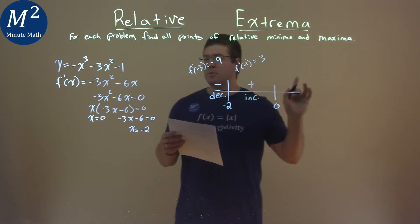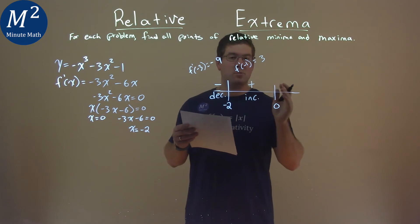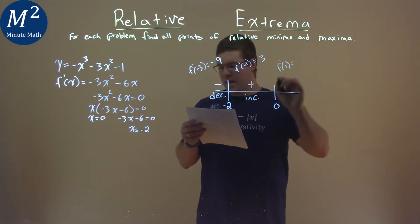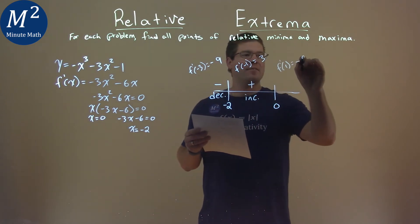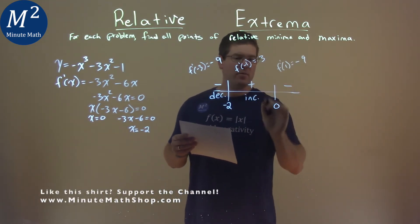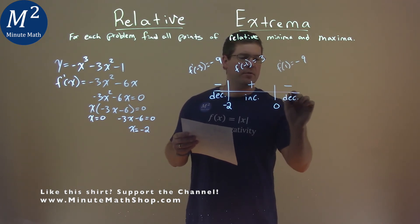From 0 to positive infinity, I picked a value of just 1 on that interval. So f prime of 1, and that comes out to be negative 9. Again, plug it into our derivative. It's negative, that's what I care about, and so we're decreasing again.